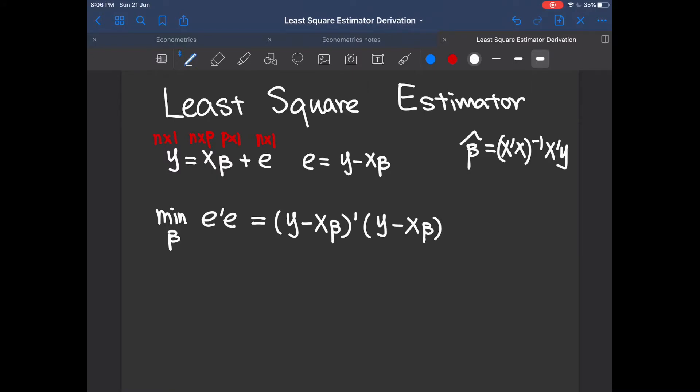So then we expand this term and we get y transpose y minus beta transpose x transpose y minus y transpose x beta plus beta transpose x transpose x beta.